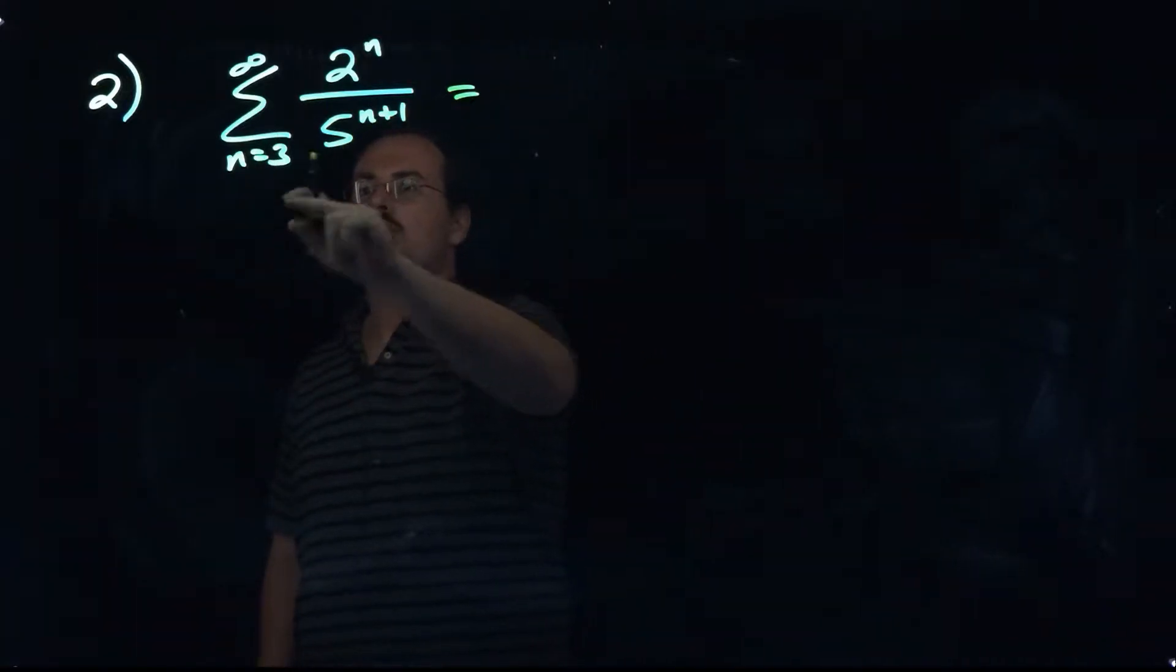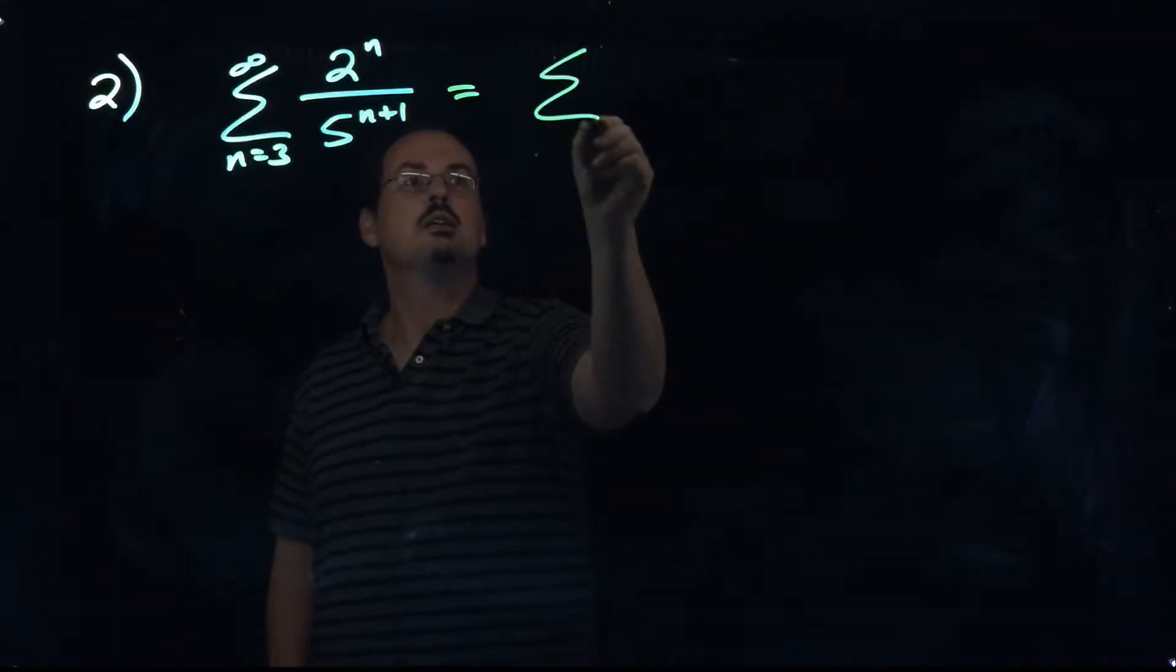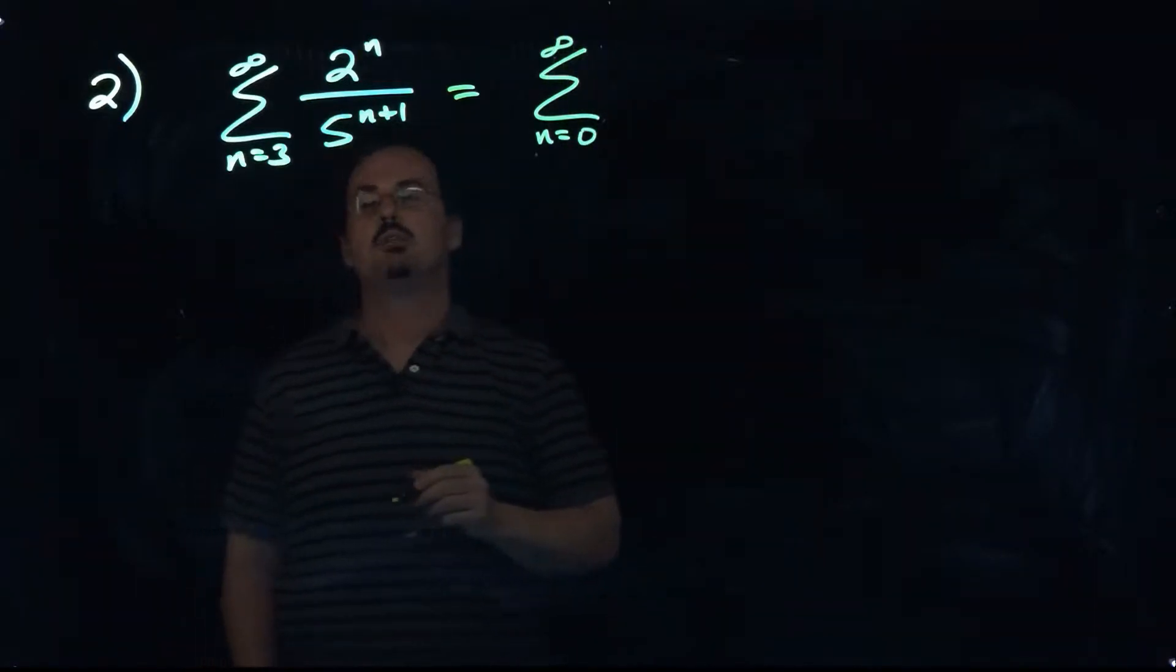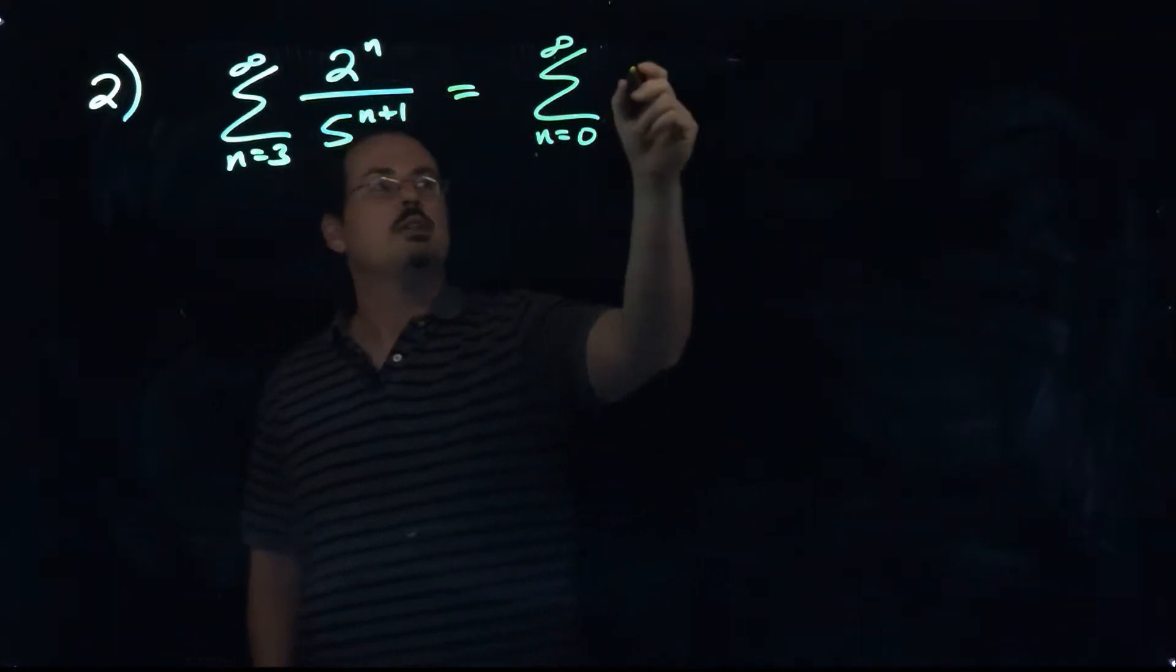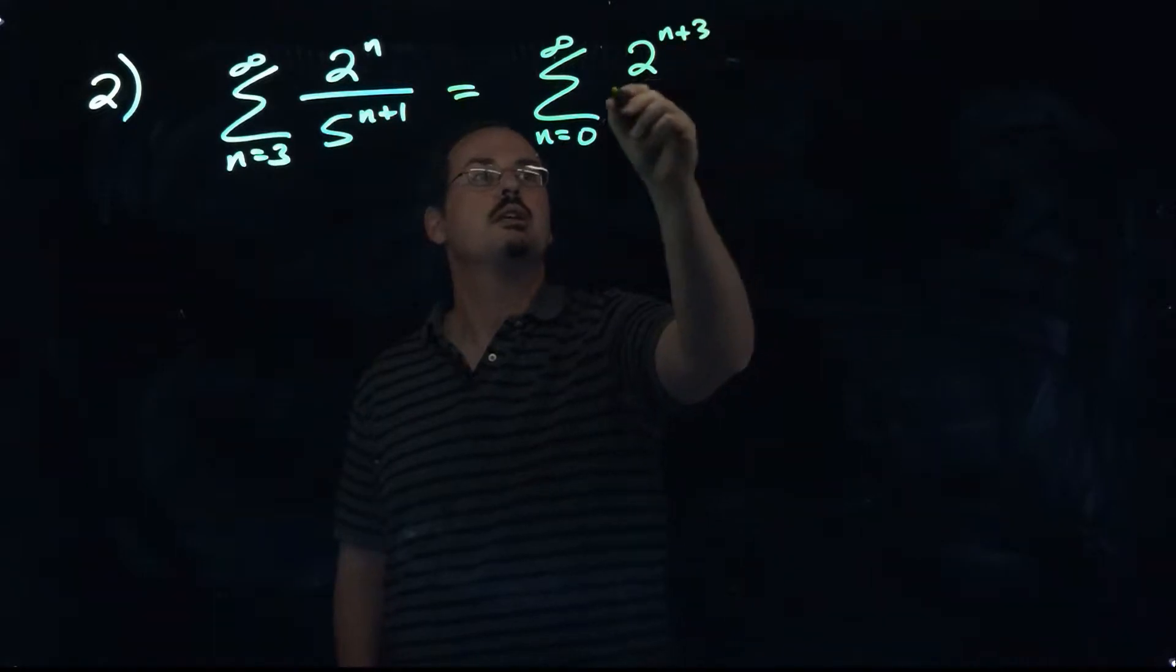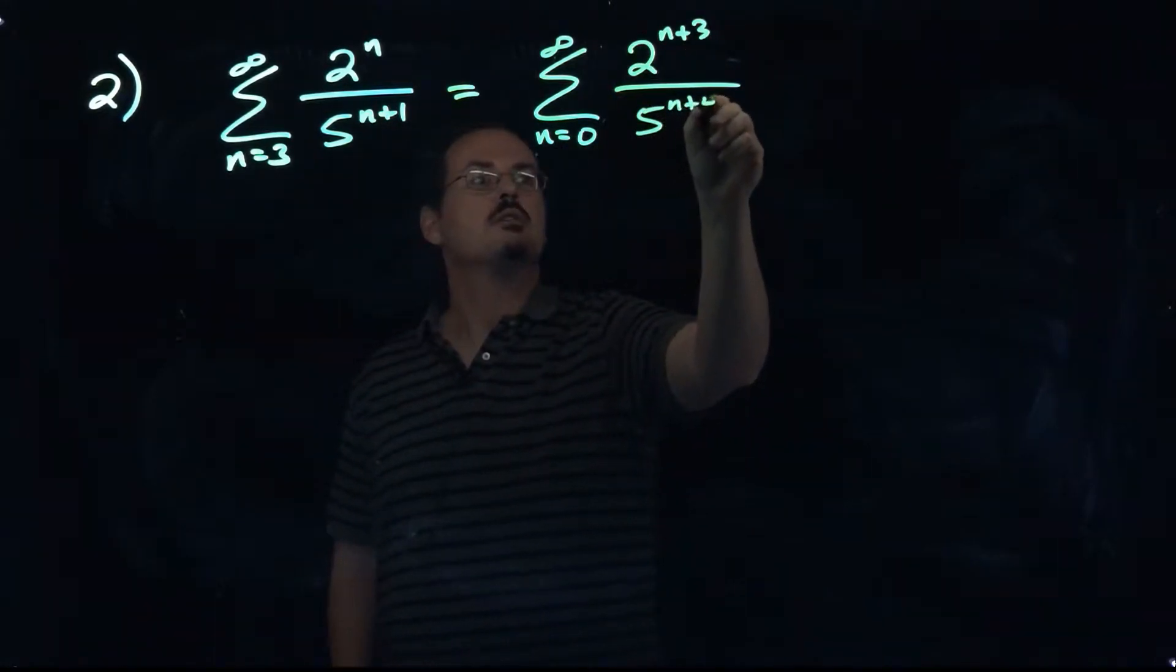First of all, we can notice that we're starting at n equals three, so we might want to fix that first. So if we change that to n equals zero to infinity, which is where we need it to be to use that formula, if I'm lowering this by three, then I need to raise these by three, so I'll get two to the power of n plus three and five to the power of n plus four.